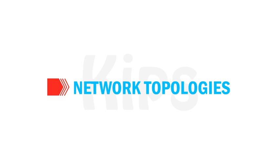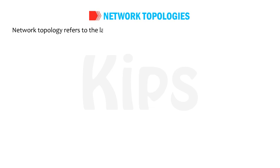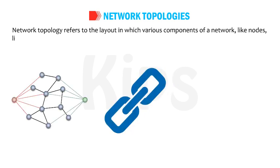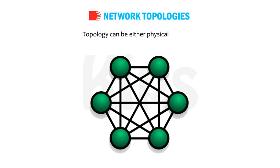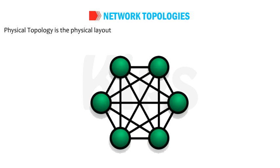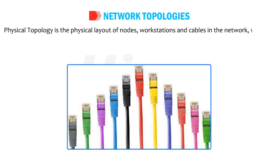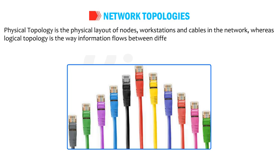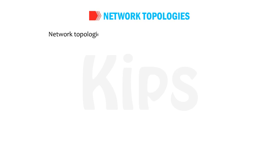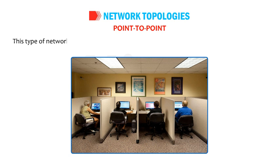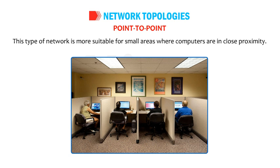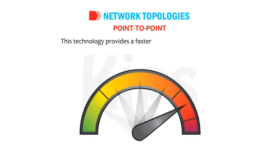Network topology refers to the layout in which various components of a network — like nodes, links, and peripherals — are connected and communicate with each other. Topology can be either physical or logical. Physical topology is the physical layout of nodes, workstations, and cables; logical topology is the way information flows between different components. Point-to-point topology is the simplest form, in which two nodes are directly connected to each other. It is most suitable for small areas with computers in close proximity, and provides a faster and reliable connection.